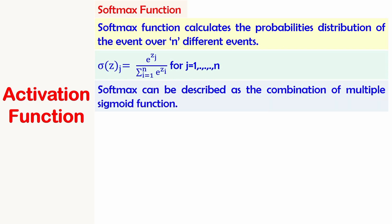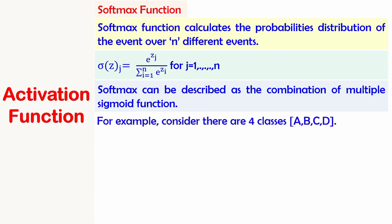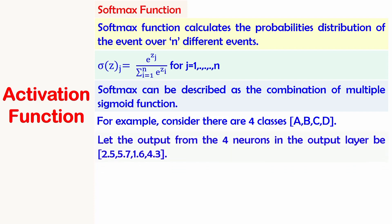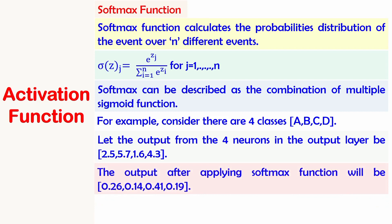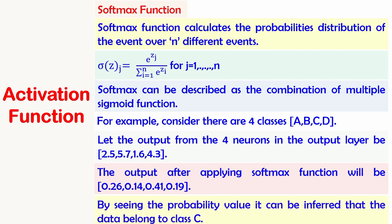Softmax can be described as a combination of multiple sigmoid functions. For example, consider four classes A, B, C, D. When a test input is given, the network has to predict which class it belongs to. Let the outputs from the four neurons in the output layer be 2.5, 5.7, 1.6, and 4.3. After applying softmax, the outputs become 0.26, 0.14, 0.41, and 0.19. The probability 0.41 is the highest, corresponding to class C, so the data is inferred to belong to class C.